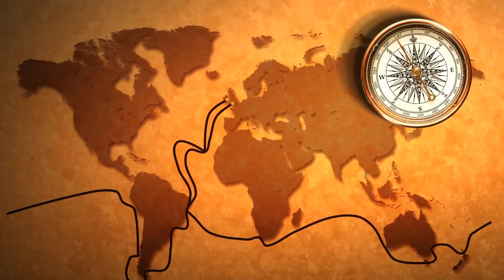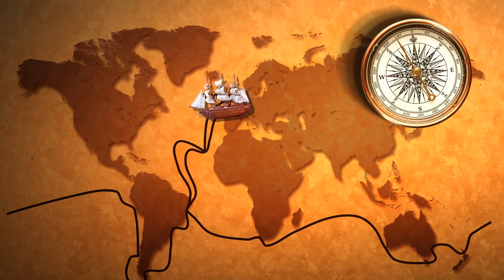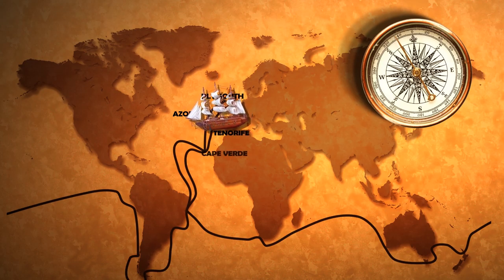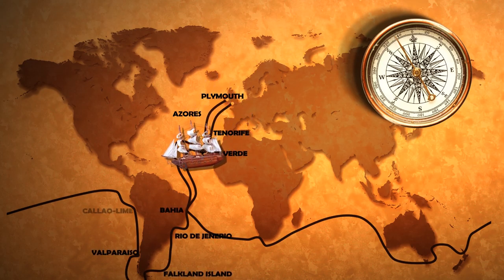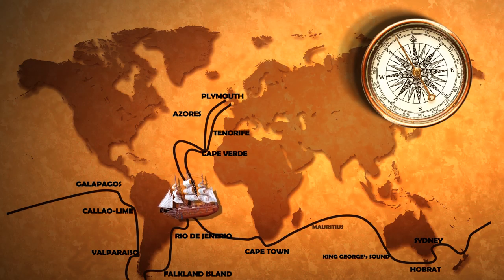Charles Darwin was born in Shrewsbury, England on February 12, 1809. In 1831, he embarked on a 5-year survey voyage on the HMS Beagle, which helped him to study specimens around the world.